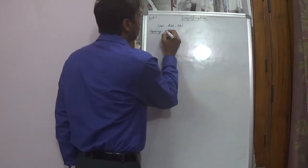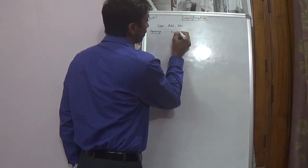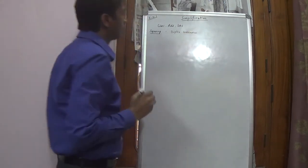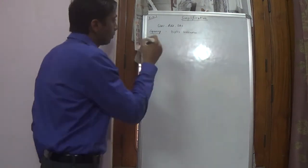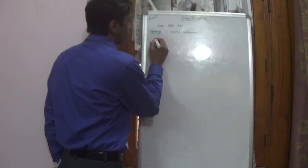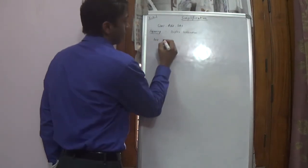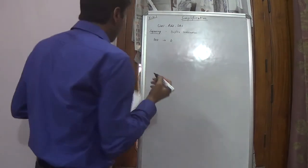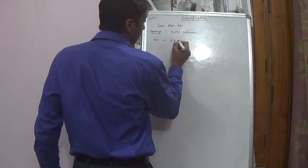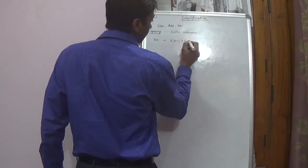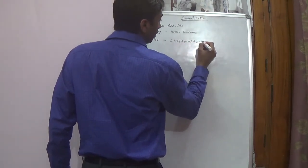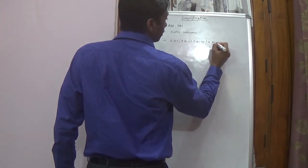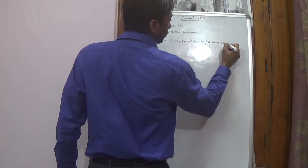In squaring of numbers we will study a method called the duplex combination method. I will represent duplex with 'd'. So we have d for 1, d for 10, d for 100, d for 00, and d for 0.